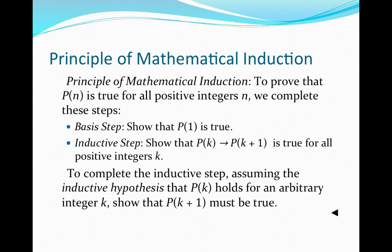We complete the basis step and show that the property holds for the first positive integer 1. Then the inductive step asks us to show that if we assume the property holds for a particular positive integer k, then we show how to prove it for the next positive integer — that is, we prove the property for the k plus first integer using the assumption that the property holds for k.